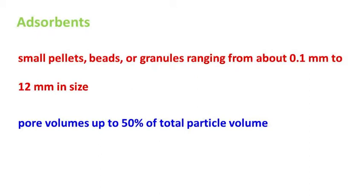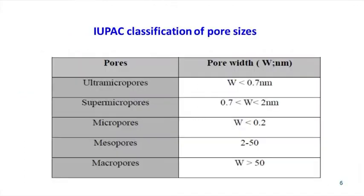A particle of adsorbent has a very porous structure with many fine pores and pore volumes up to 50 percent of the total particle volume. Adsorbent pores — the total number of pores, their shape and size — determine the adsorption capacity and even the dynamic adsorption rate of the adsorbent.